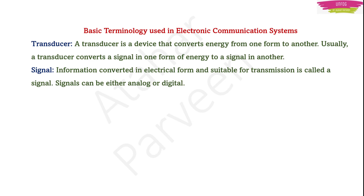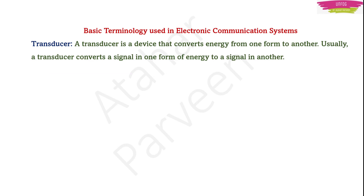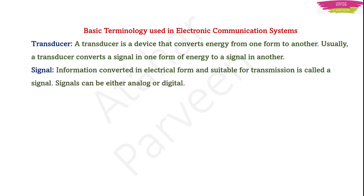Next is a signal. A signal is information which is converted into electrical form and is suitable for transmission. You can roughly think of a signal as a wave. This signal can either be analog or digital — this you have to remember.